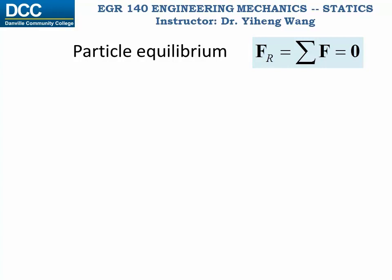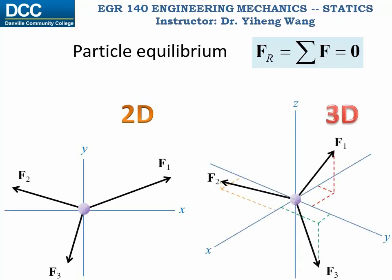Since a particle is an idealized object with no size or shape and is only represented by a dot in space, the forces acting on the particle will be concurrent. For a 2D problem, the vector equation can be written as two scalar equations, that the resultant forces in the x and y direction must equal zero, respectively.